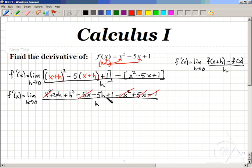This means f prime of x is equal to the limit as h goes to 0 of 2xh plus h squared and minus 5h. Finally, to simplify the h's, we'll split this fraction over a common denominator into three fractions.